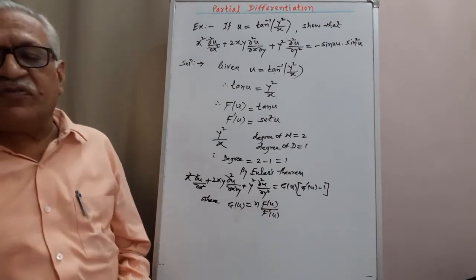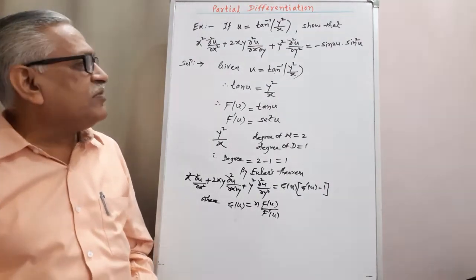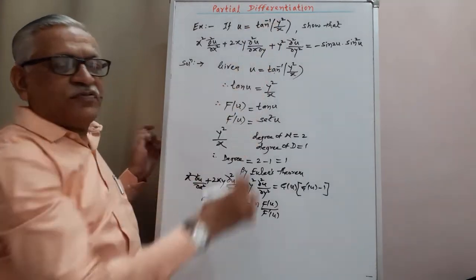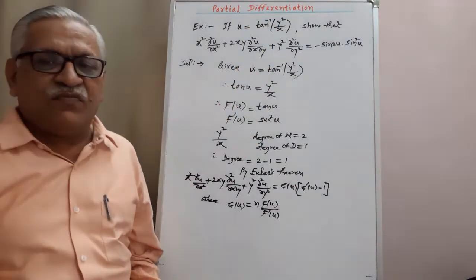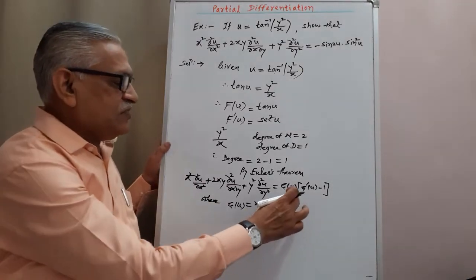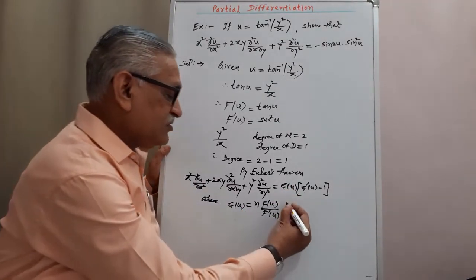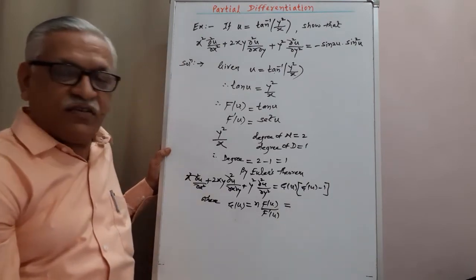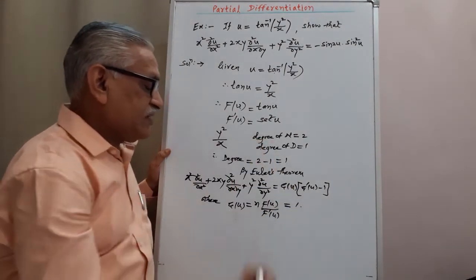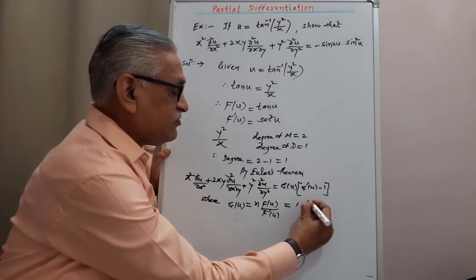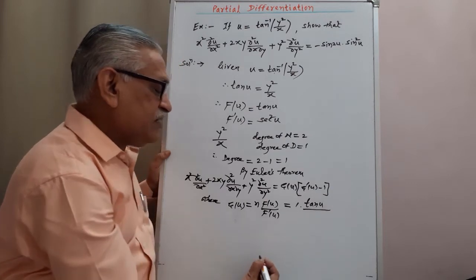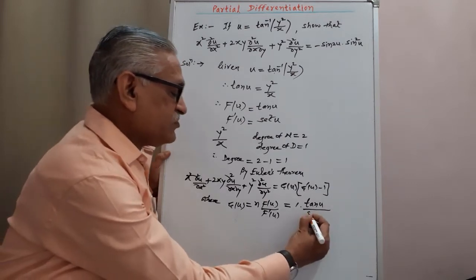This problem is of Type 2, where u is a function of some homogeneous expression — a function of a function. When we have a function of a function, we apply this result. Substituting the values: n·f(u) / f'(u), where n = 1, f(u) = tan(u), and f'(u) = sec²(u).